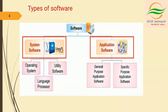Coming to the types of software — this diagram shows the classification of software. Software can be divided into two types: system software and application software. System software is classified into three types: operating system, language processor, and utility software. Application software is again divided into two types: general purpose application software and specific purpose application software.